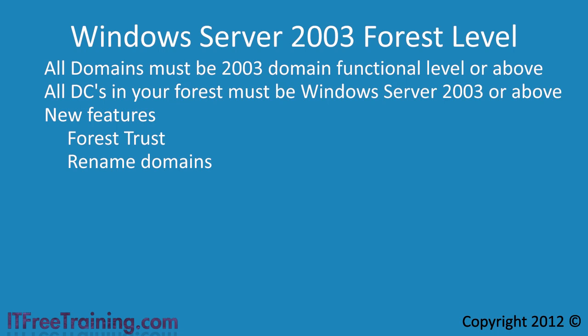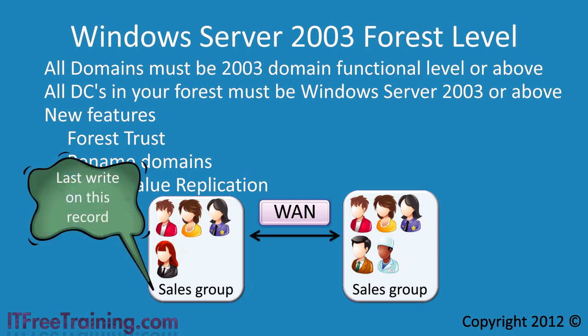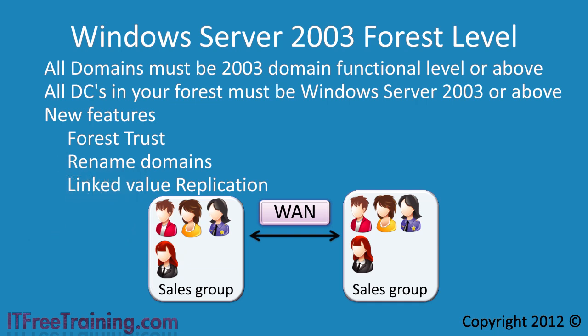The third feature of Windows Server 2003 forest level is linked value replication. This applies to groups in Active Directory. Consider a group on two different domain controllers separated by a wide area network, with users added to the group from both domain controllers. Before linked value replication, Windows could use a last write wins policy — whoever updated the record last would be considered the newest and correct record, meaning users added to the group could be lost during replication. Linked value replication instead replicates only the changes in group membership, making groups more accurate and reducing network traffic because only the changes are replicated, not the entire group.